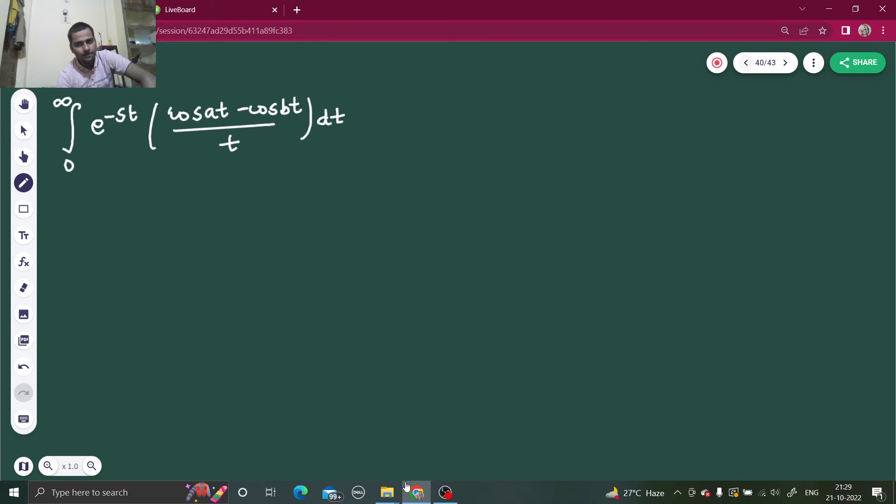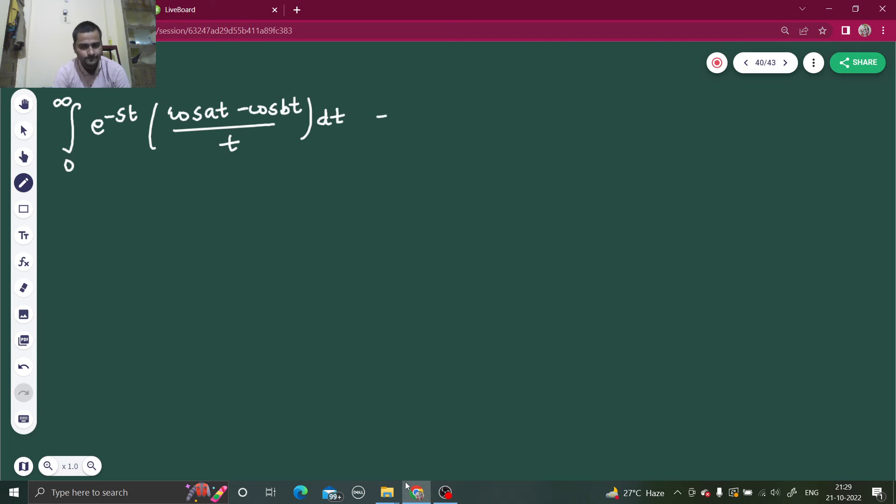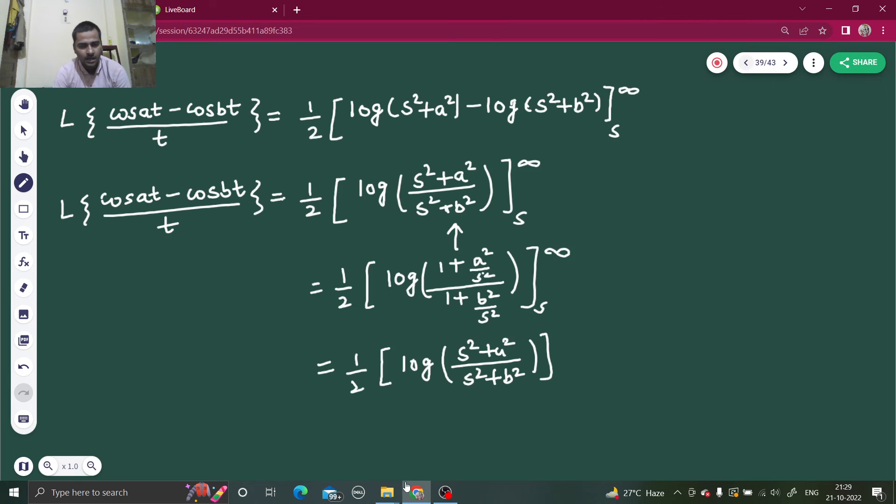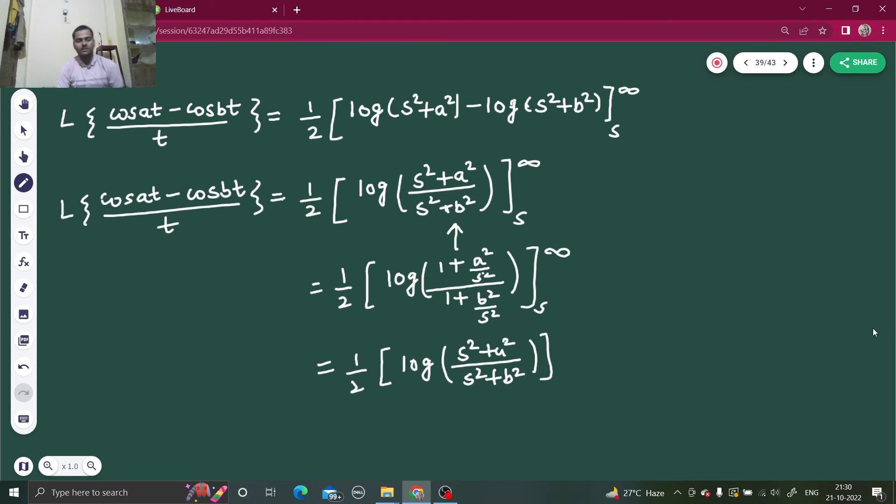And by the help of property what you have got that is in the RHS, so that is half log s square plus a square over s square plus b square. Wait a minute, I put infinity there so that became log 1 which is 0 and then I kept s there, so in the middle I will get a negative sign. Log 1 that will do nothing but jump to the power and that will just flip, denominator becomes numerator and numerator becomes denominator.